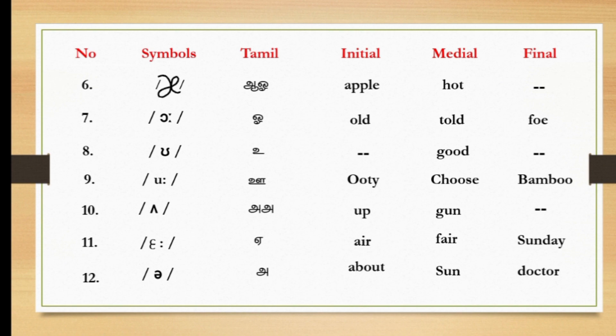Eighth one, u, as in good. Good. Ninth one, ooo, as in ootie, shoes, bamboo. Tenth one, aah, as in up, gun.